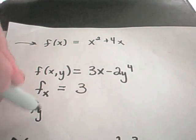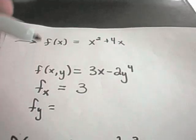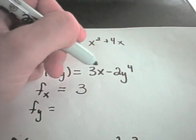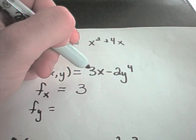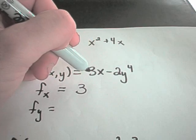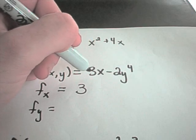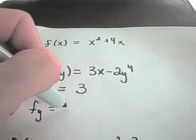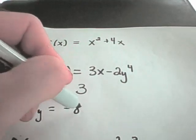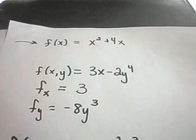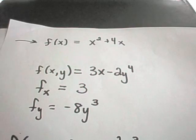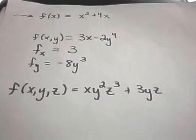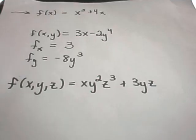If I take the partial derivative with respect to y, now my x term is like a constant. So 3 times a constant is a constant, and the derivative of a constant is 0. The derivative of negative 2y to the fourth gives me negative 8y to the third power. So let's do another example here to make more sense out of this.